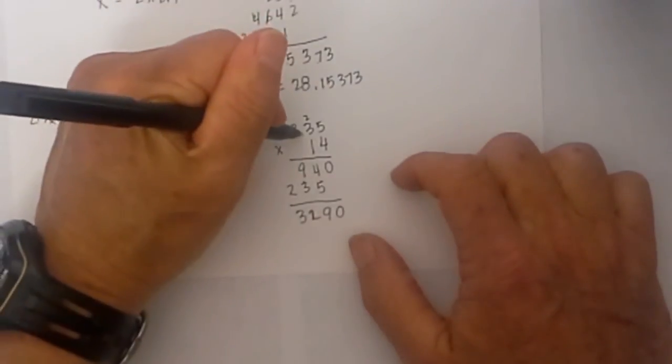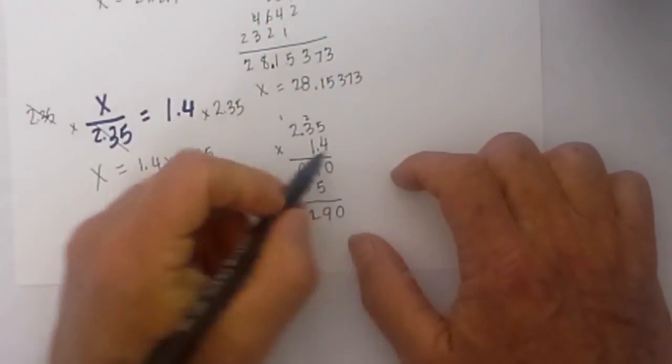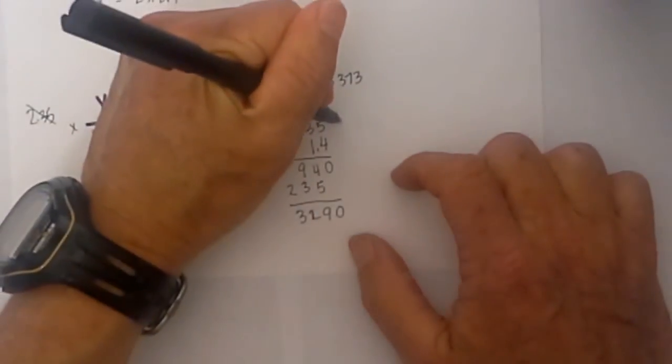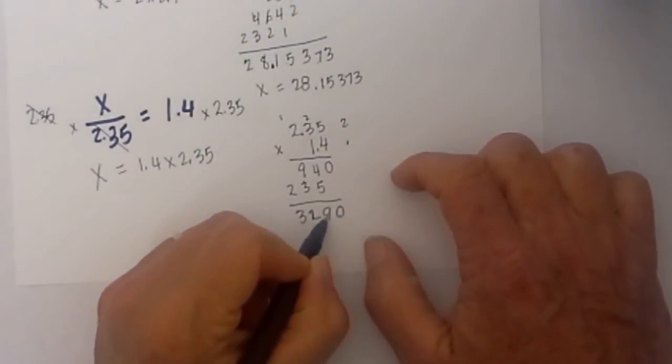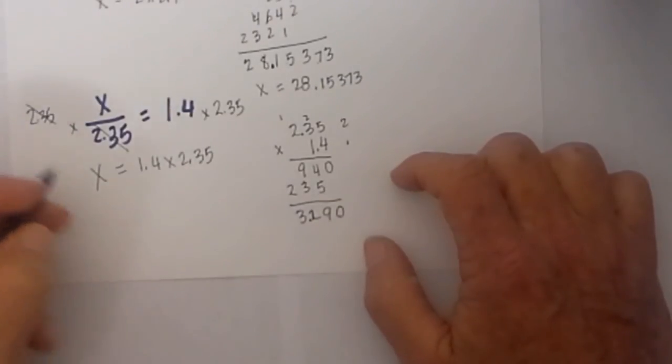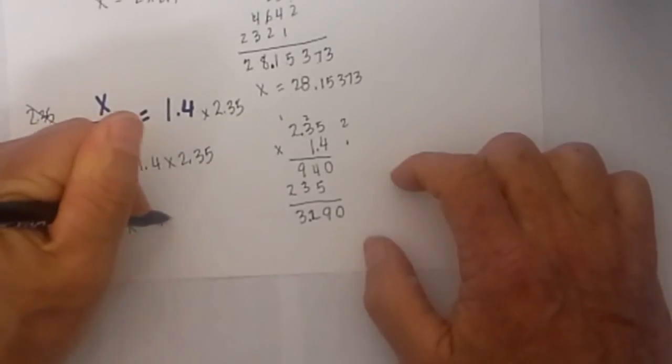Now I go back and here are the decimal places. I have 1, 2 to the right here and 1 to the right there, so I now have 1, 2, 3, so it is 3.290. So x is equal to 3.290.